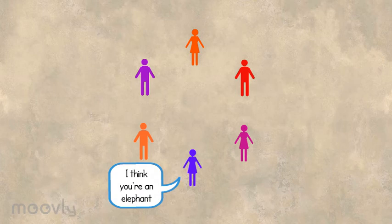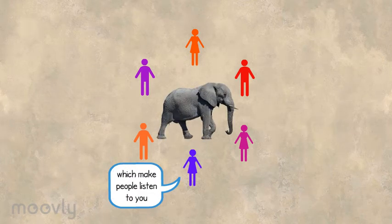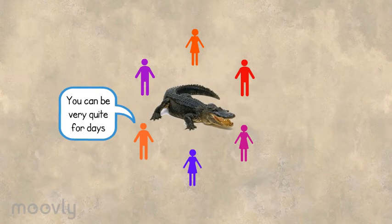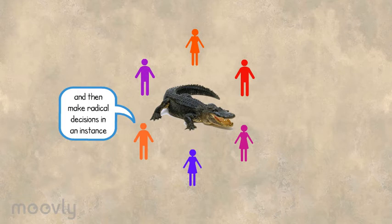I think you are an elephant. You have a natural way of authority which makes people listen to you. I think you are an alligator. You can be very quiet for days and then make radical decisions in an instance, like an alligator waiting for its prey.